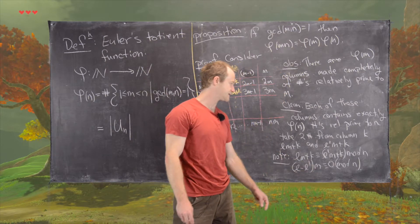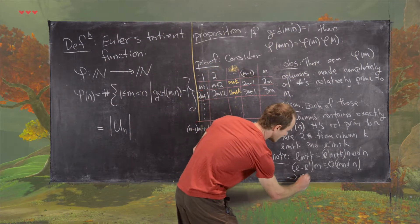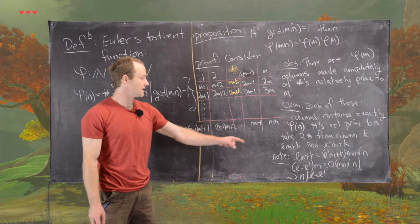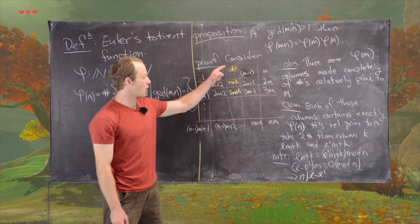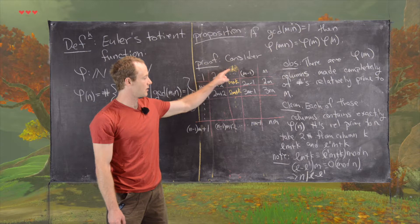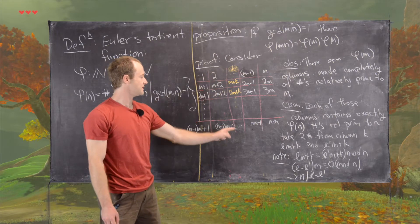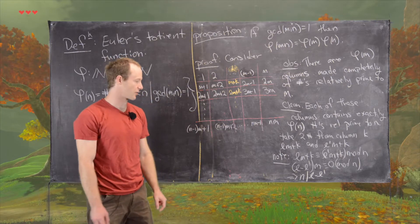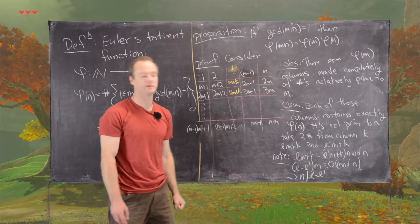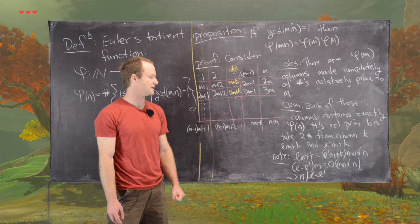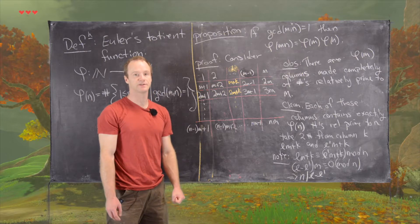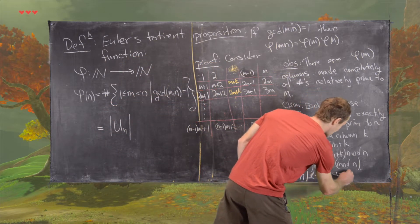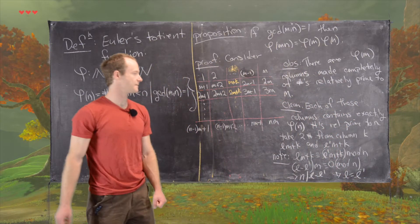Since gcd(m, n) = 1, n does not divide m, so n must divide l − l'. But since l and l' are both between 0 and n−1, their difference cannot be a nonzero multiple of n. Therefore l must equal l'. This means the entries in column k are all incongruent mod n — they represent every residue class mod n exactly once.